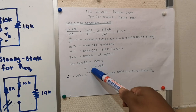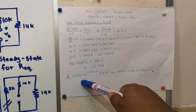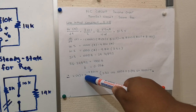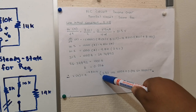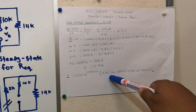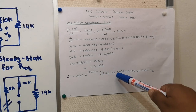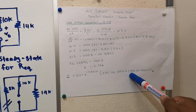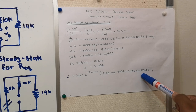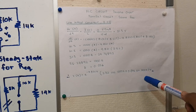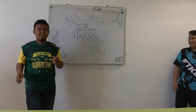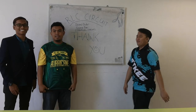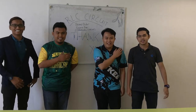Therefore V(t) equals e to the negative 9.821T times 2.52 cos(1000T) plus 0.056 sin(1000T) volts. That is all from us. Thank you.